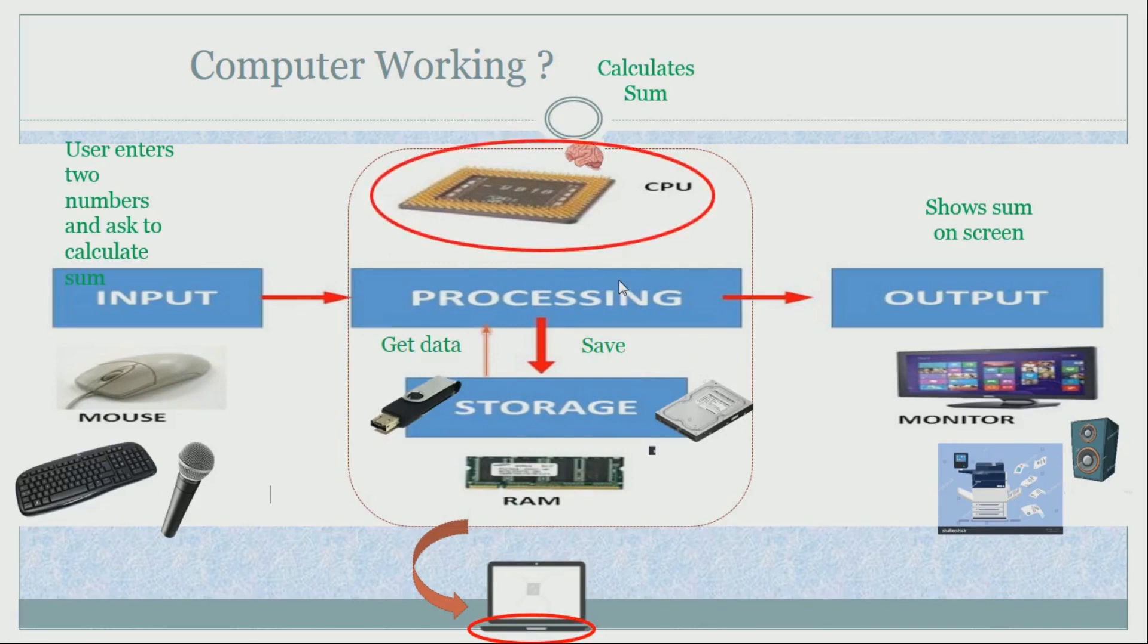CPU, this is actually the brain of the computer. It performs all operations like additions, subtractions, etc. Next comes the storage. Storage is the place where computer stores data, just like a cupboard is used to store clothes. Computer places or saves data over here and gets it back once needed. Hard disk and USB are the examples of a storage device.